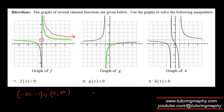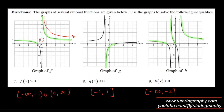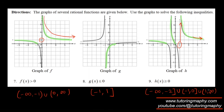For f(x) less than or equal to zero, x starts from negative one — not included because that's a vertical asymptote — and goes to one, where one is included because the function equals zero there. For h(x) greater than or equal to zero, the answer is negative infinity to negative two (negative two included) union one to zero (one excluded as vertical asymptote, zero included) union one to positive infinity.